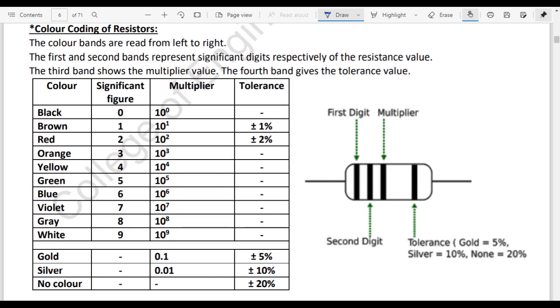Color coding of resistors. For color coding of resistors, we have to read from left to right. First band code represents significant digits, third represents the multiplier and fourth band represents the tolerance.